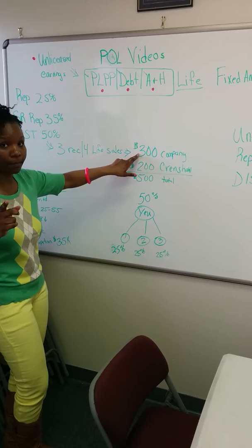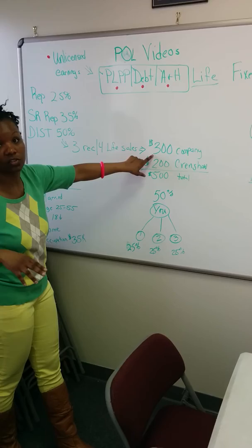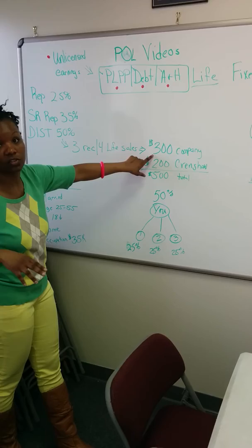And so again, the company gets you $300 if you get the three recruits and four life sales as a district leader. However, you can do this as well as a rep. You still get money from Savitri, the $200, just not the $300.